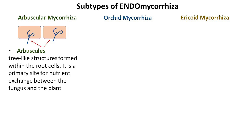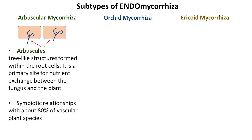Arbuscular mycorrhiza is the most prevalent form of endomycorrhizal association. The fungal hyphae penetrate the root cells, forming tree-like specialized structures called arbuscules, serving as the primary site for nutrient exchange between the fungus and the plant. This association is widespread — about 80% of all vascular plant species form symbiotic relationships with arbuscular mycorrhizal fungi. The evolution of arbuscular mycorrhiza dates back around 450–500 million years ago, matching with the colonization of land by plants.